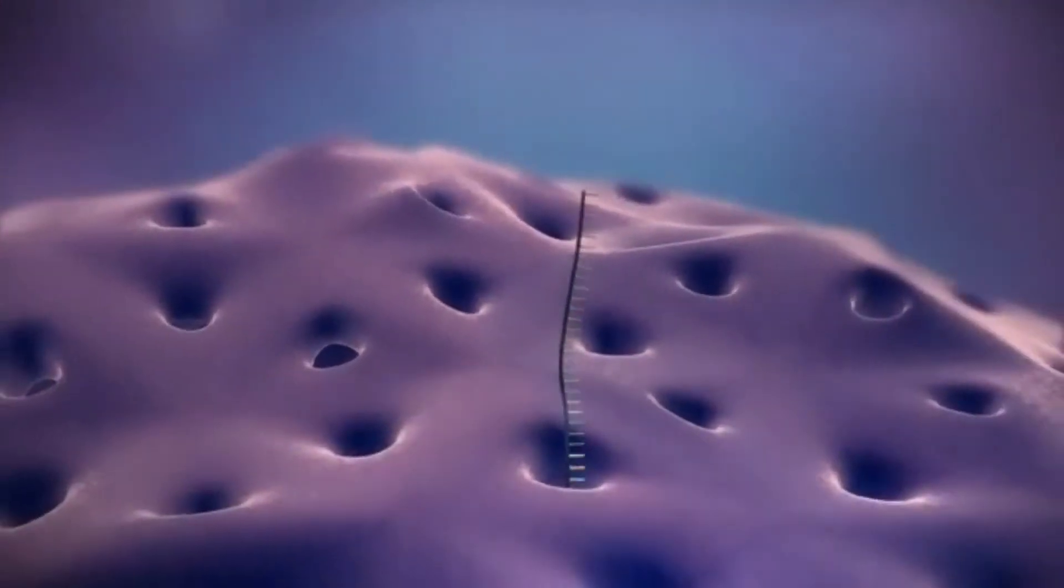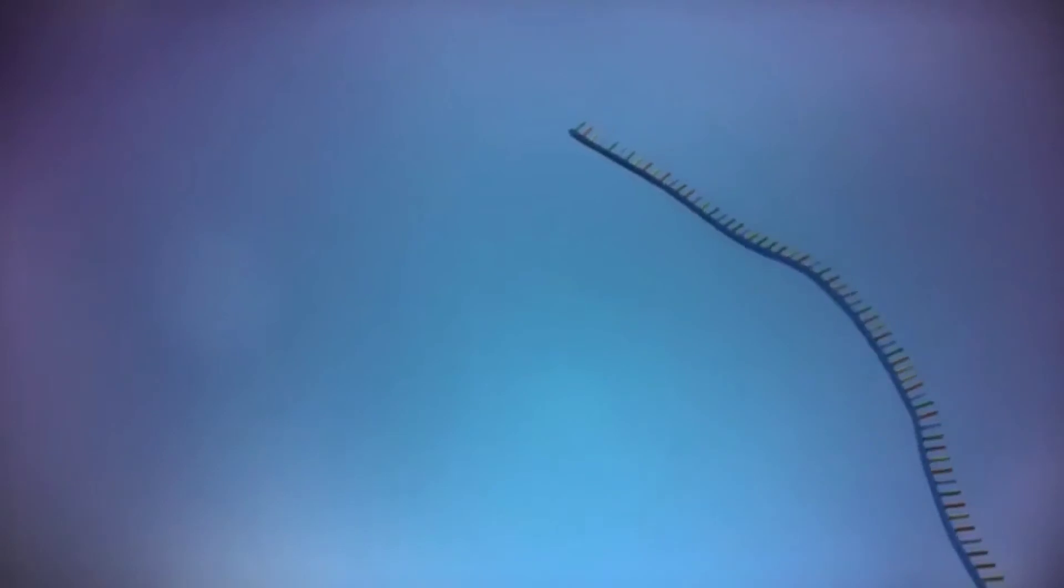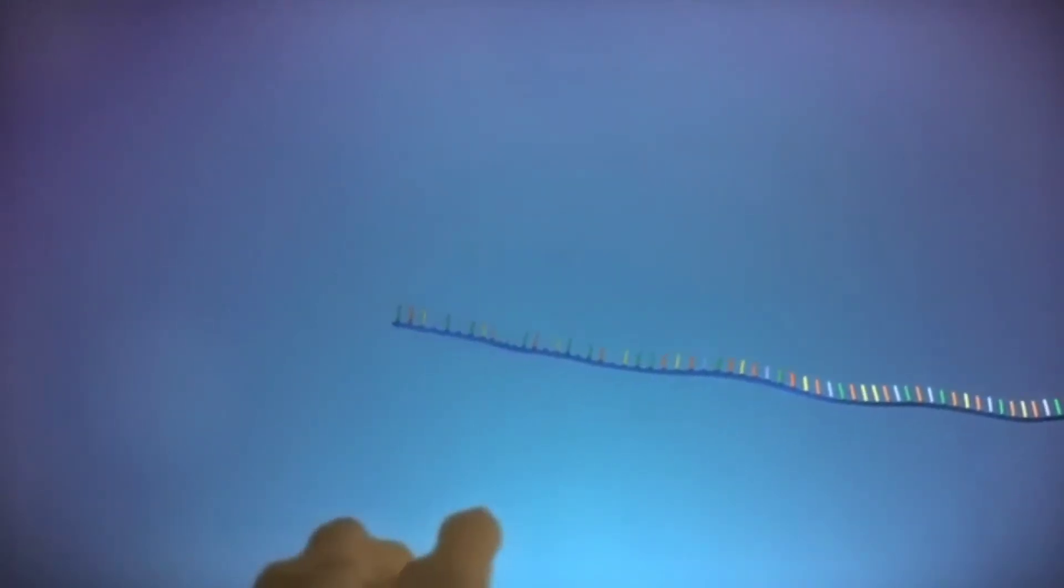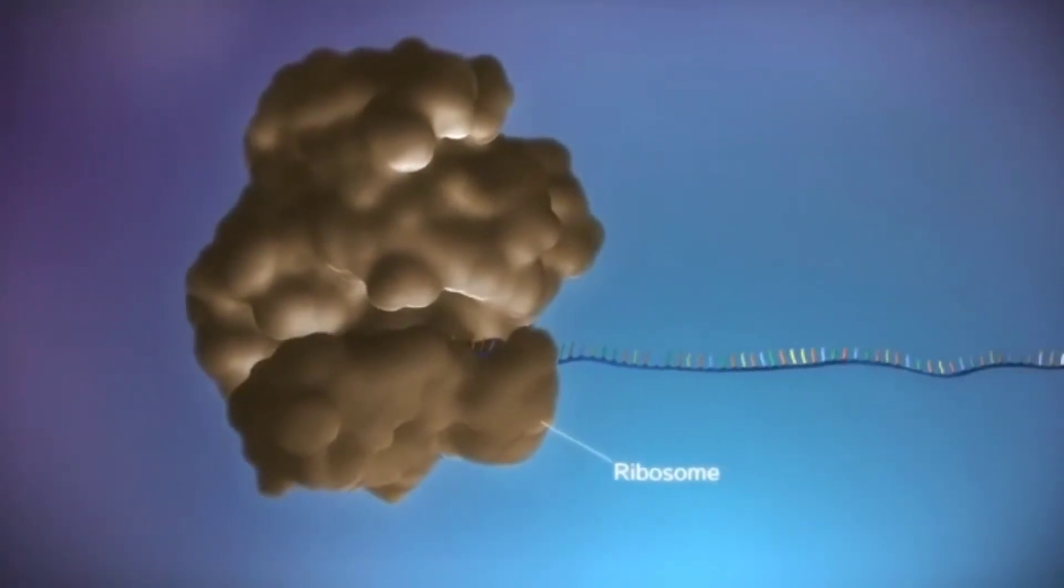The messenger RNA then moves out of the nucleus into the cytoplasm. Protein factories in the cytoplasm, called ribosomes, bind to the messenger RNA.